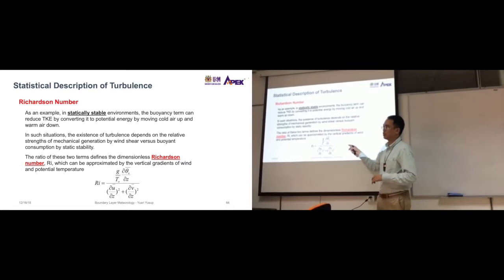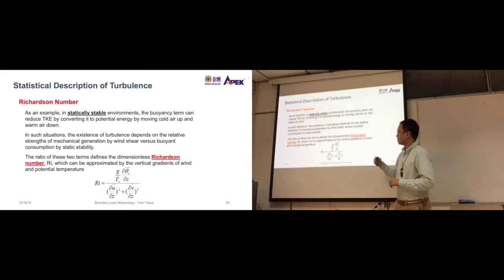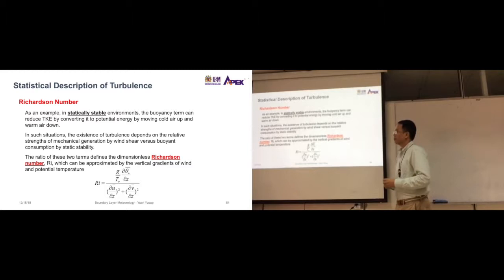Where larger values means more generation, turbulence is generated by the buoyancy term. If lower values less than one, means it's mechanically generated. Turbulence is generated by the mechanical path.